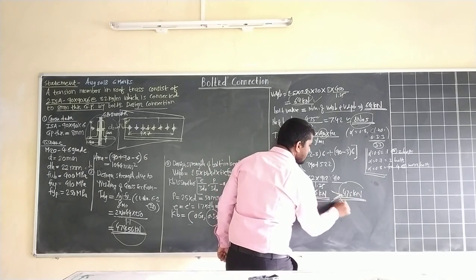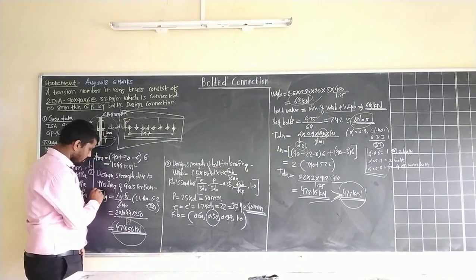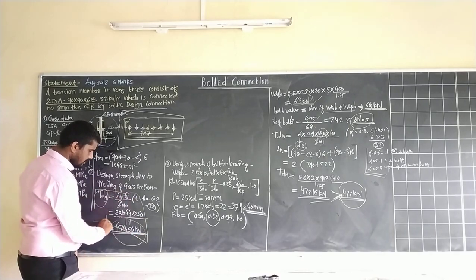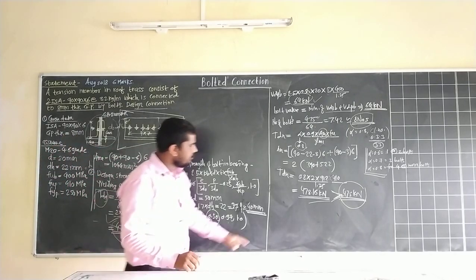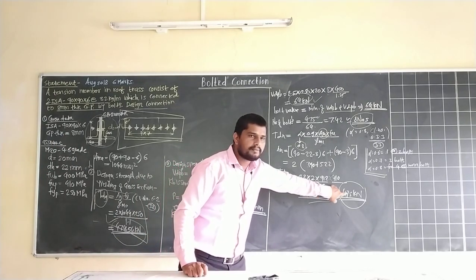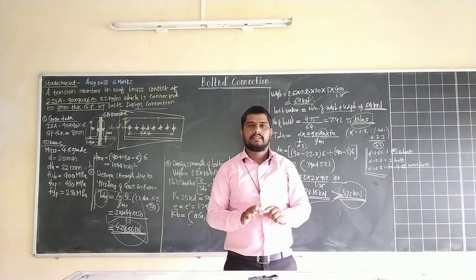This is greater than the value of T_DG. T_DG value is 474, and we got T_DL is 478. This value is greater than T_DG, which means our connection is safe.